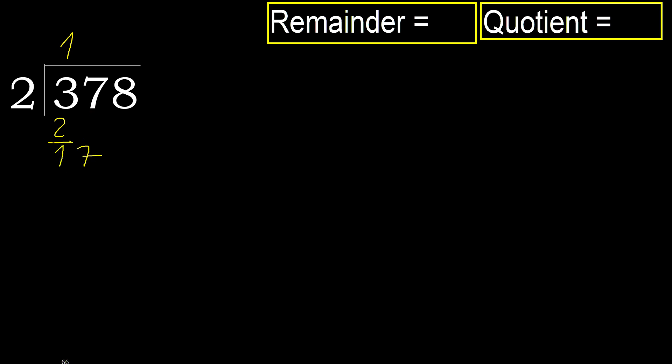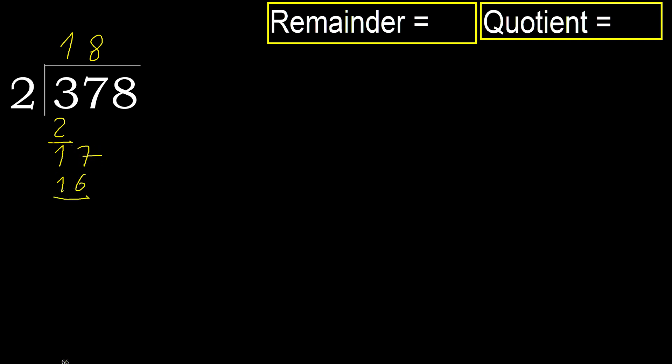17. 2 multiplied by 9 is 18 — 18 is greater. Multiply by 8: 16 is not greater, ok. Subtract: 17 minus 16 is 1.